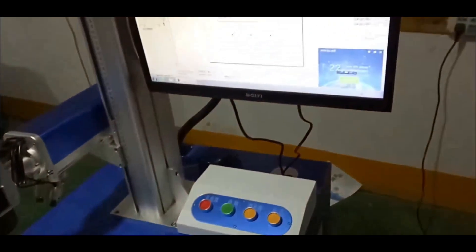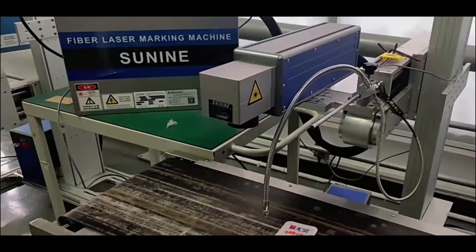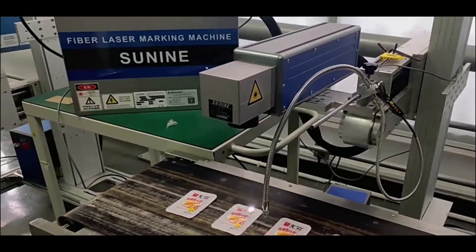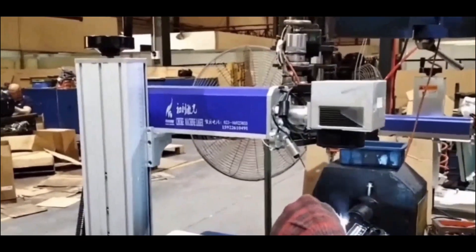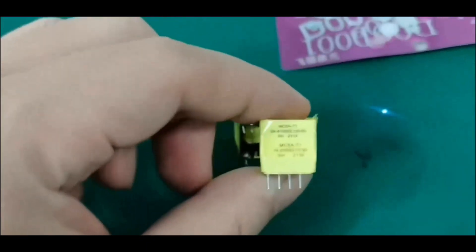First of all, let's take a look at the application scenario of fiber laser marking machine. It is widely used in electronics, food, medicine, construction and other industries, marking and etching for various products.